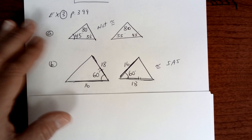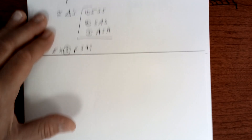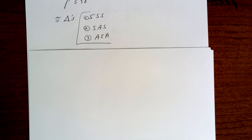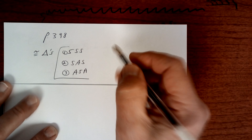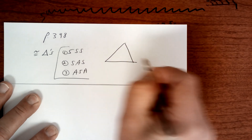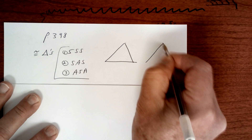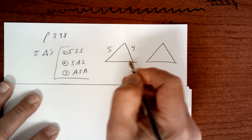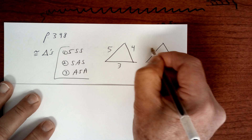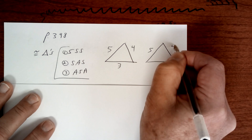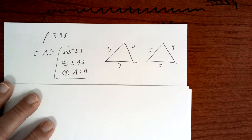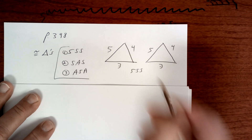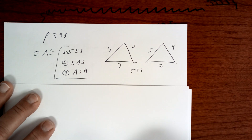So we're using these three. How would side, side, side look? They'd have to be the same — it'd have to be like 5, 4, 3 and 5, 4, 3. That would be side, side, side. Side, angle, side we just did. This is called included — write that down. Included means it's in between.